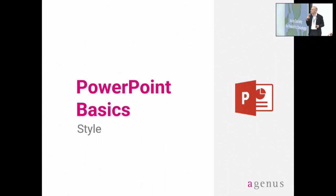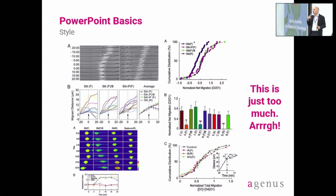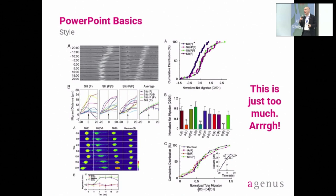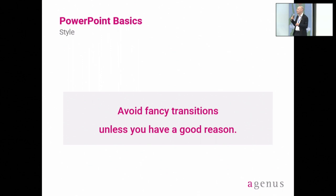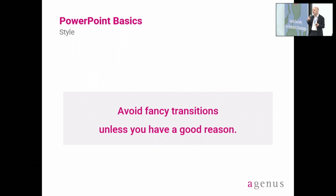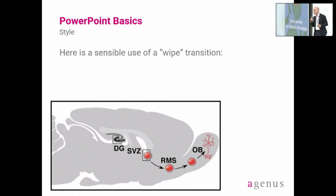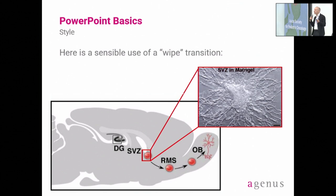What about the style? It's nice to include an image on every slide, but you should limit the number of items. There's just too much information sometimes. Although medical and scientific presentations might contain this kind of information, if there are non-scientists in the audience or medical students, they just might not get it. Here's a simple rule for figures and images: if you're not going to take the time to explain it, don't bother having it in there. Avoid fancy transitions — I used to animate all my slides, and now I don't. One reason is that it's often too large a file, and I like to turn it into a PDF and give it as a handout. Animations just won't come out on a PDF. But sometimes you can use a wipe transition — here's an example that actually works. And don't try to show too many slides; often less is more.